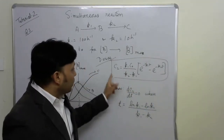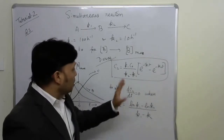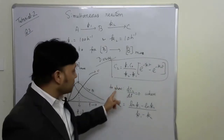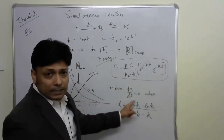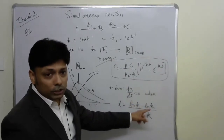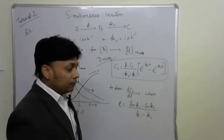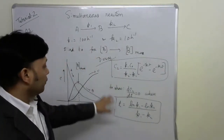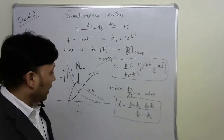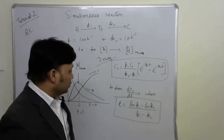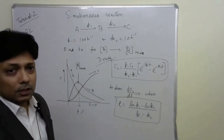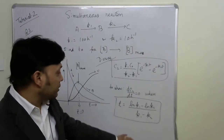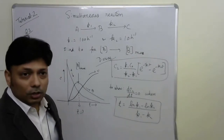Once we have derived the expression and found the time t by setting dC2/dt equal to zero, plug in the values of K1 and K2 to find the time T. Please verify your answer with each other.